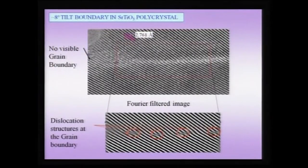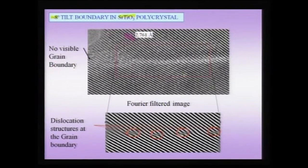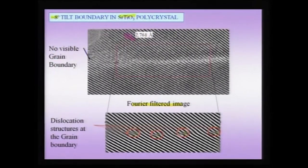This is a nice example of a low angle grain boundary in strontium titanate — though not a symmetric one — where the misorientation angle between the two grains is about 8 degrees. The existence of dislocations along the grain boundary is seen in the image below, which is a Fourier-filtered image showing distinct dislocations present along the grain boundary. We can clearly see in a high-resolution lattice fringe image that has been Fourier filtered that a low angle grain boundary consists of an array of dislocations.